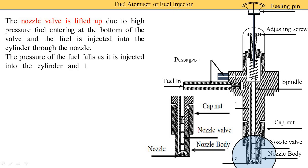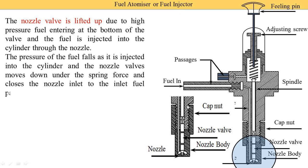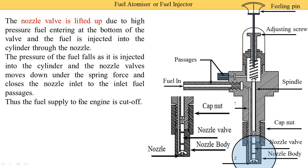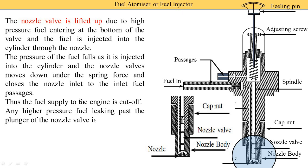The pressure of the fuel falls as it is injected into the cylinder. Then what happens — the nozzle valve moves down under the spring force. When there is no diesel in this passage, the pressure is reduced, so the nozzle valve moves in the downward direction due to spring tension and closes the nozzle inlet to the fuel passage. When this nozzle valve is closed, no fuel is injected inside the cylinder. Thus the fuel supplied to the engine is cut off. Any higher pressure fuel leaking past the plunger of the nozzle valve is fed back to the fuel tank through the outlet fuel passage.